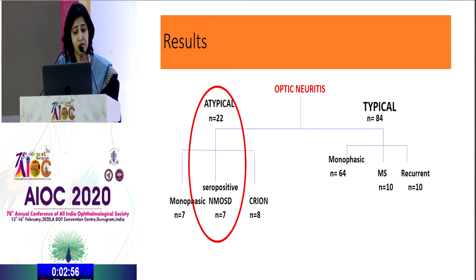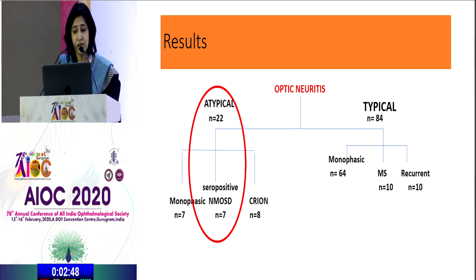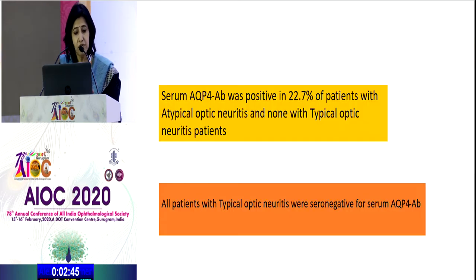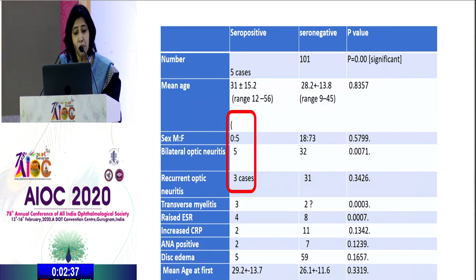All five seropositive patients plus the two seronegative NMOSD patients had atypical optic neuritis. In all our patients, we had 22 atypical and 84 with typical optic neuritis. Serum aquaporin-4 antibody was positive in 22.7% of patients with atypical optic neuritis and none in patients with typical optic neuritis. More patients who had bilateral or recurrent optic neuritis, or who went on to have transverse myelitis, were seropositive compared to seronegative, and this was significant.